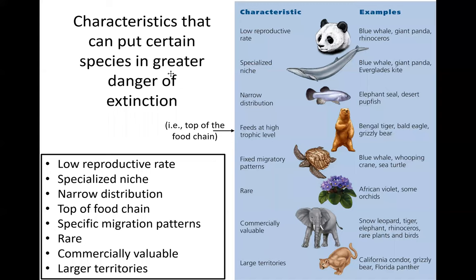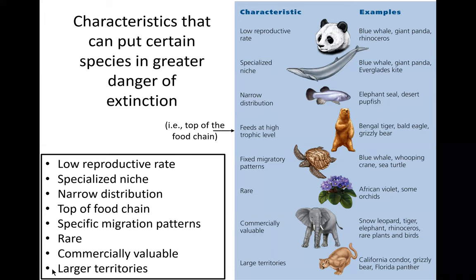There are certain characteristics that can put species in greater danger of extinction. Those include having a low reproductive rate, having a specialized niche, having a narrow distribution, being at the top of the food chain (feeds at high trophic level), having specific migration patterns, being a rare organism, being commercially valuable, and having larger territories.